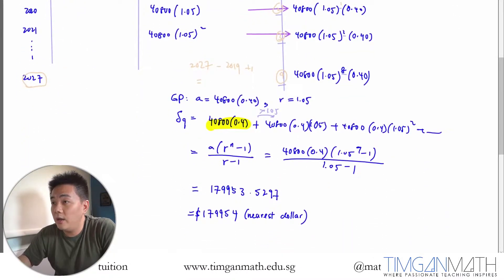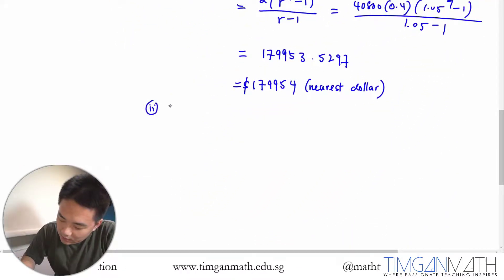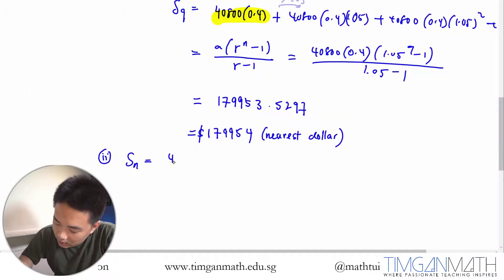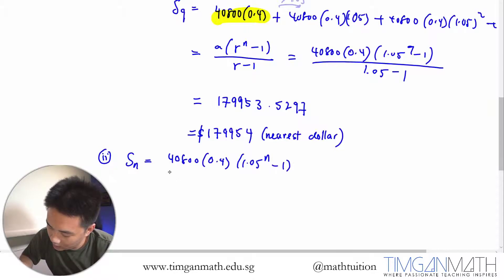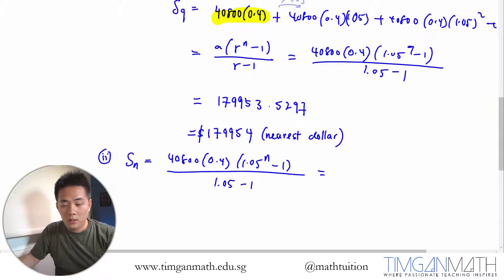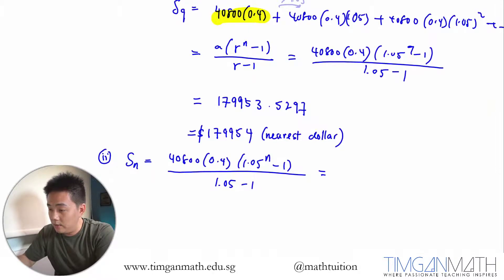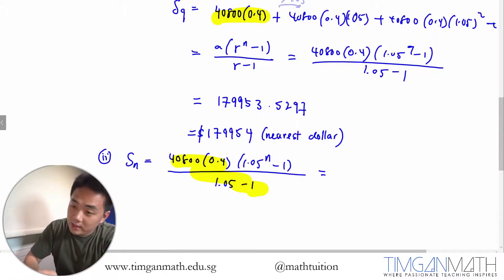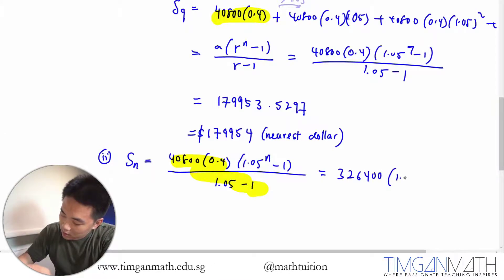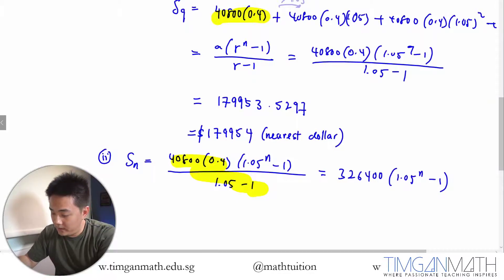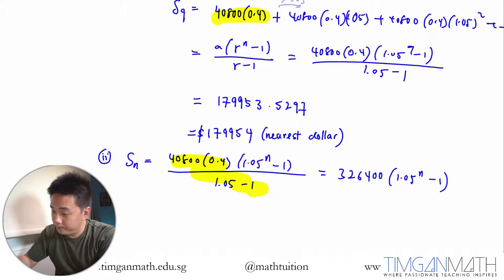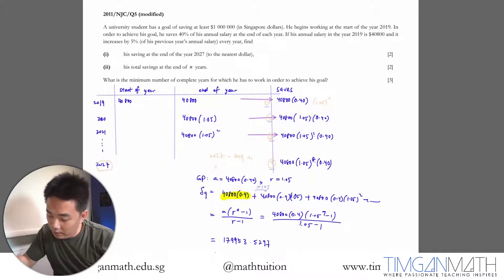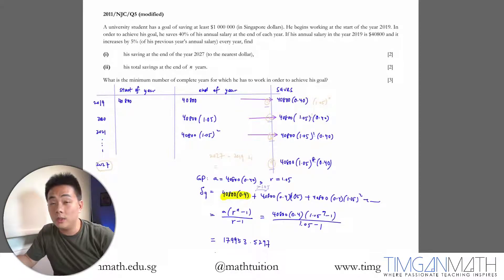He saves $180,000, so his total saving at the end of n years would be Sn. We're just going to use the same formula, so this here is $40,800 times 0.4 times (1.05^n - 1) over (1.05 - 1). What is left is $326,400 divided by 0.05 times (1.05^n - 1).